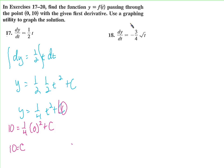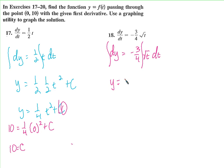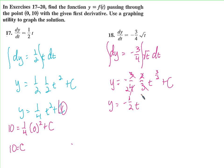Next, we want y, so multiply both sides by dt: dy equals negative three-fourths times square root of t dt. Take the antiderivative: y equals negative three-fourths times two-thirds t to the three-halves plus C. The threes cancel, leaving y equals negative one-half t to the three-halves plus C. Using the point (0, 10): 10 equals negative one-half times 0 to the three-halves plus C, so C equals 10.